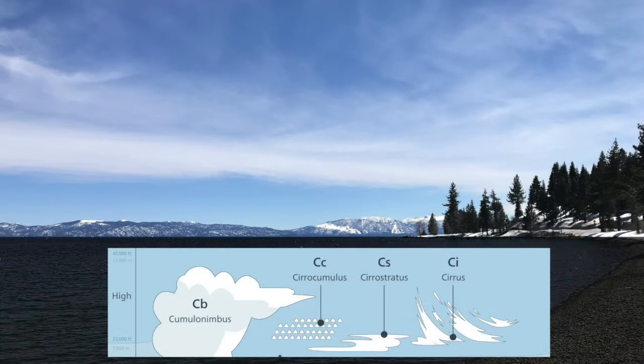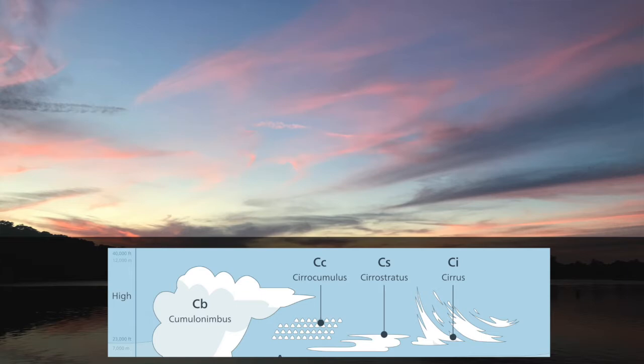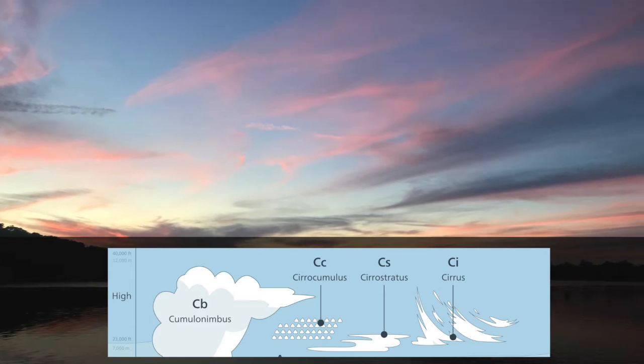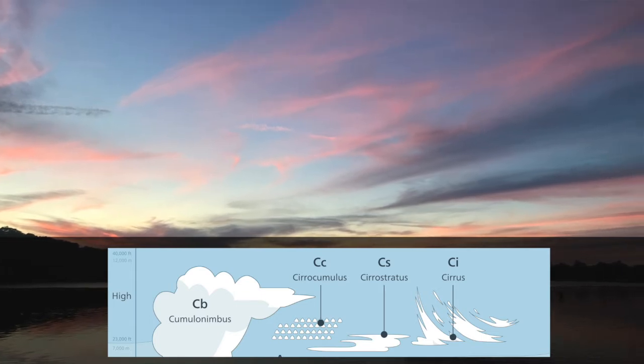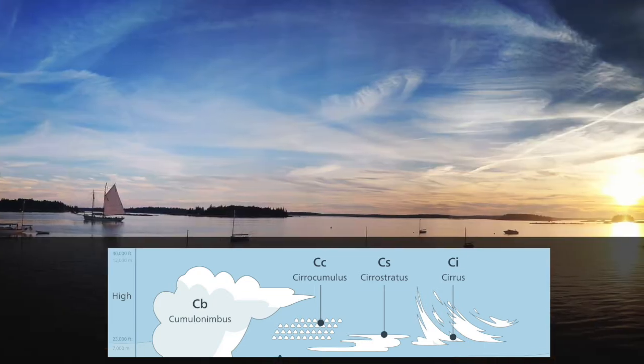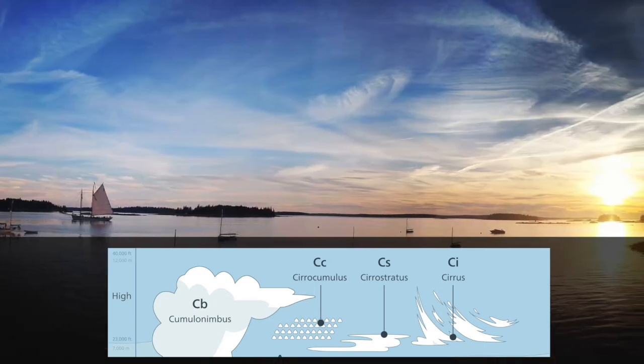Cirrus, cirrocumulus, and cirrostratus are the three cloud types found at the highest part of the atmosphere. In general, these clouds are wispy-looking, maybe puffy, and generally made with ice crystals.